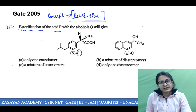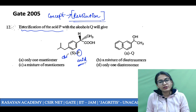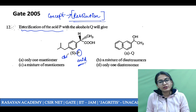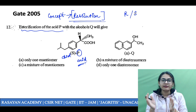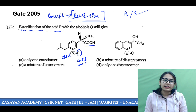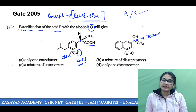Esterification of acid P — this is your acid P, and this is a chiral acid because only one enantiomer is given. Either it could be the R enantiomer or S, but only one of them is given, which means this is a pure enantiomer. It is going to react with alcohol Q, which also has a chiral center, but it is ±Q, which means it is a racemic mixture.